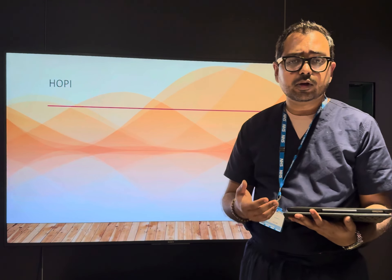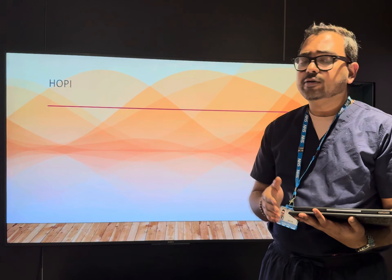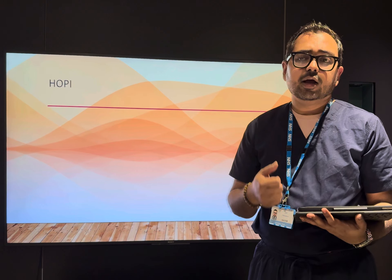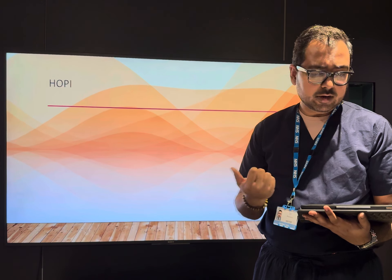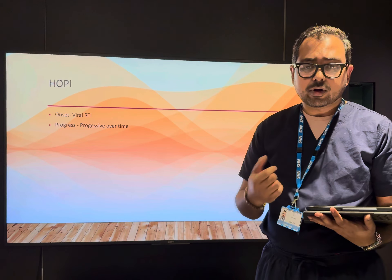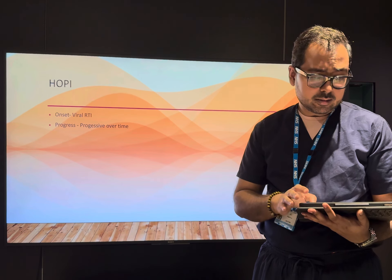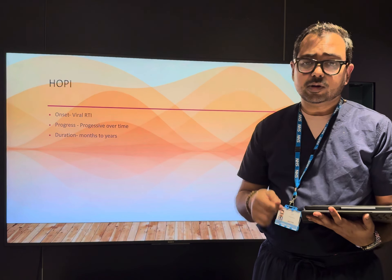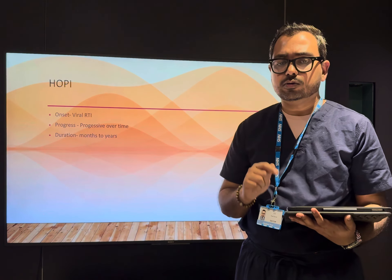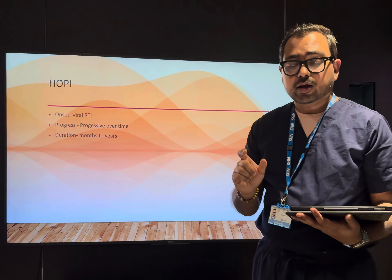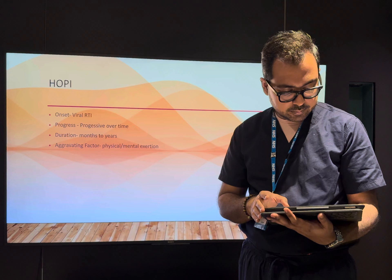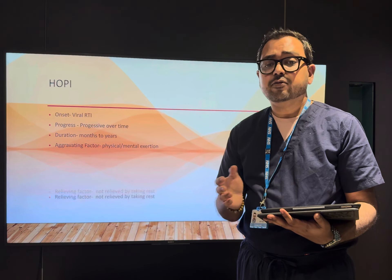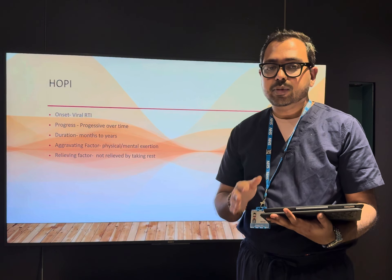In the history of present illness, always start with onset — most of the time it is associated with upper respiratory tract infection or a viral infection. Then explore progress and duration — it evolves over months to years. For diagnosis, the duration criteria requires at least six weeks. Ask about aggravating factors such as physical or mental stress.